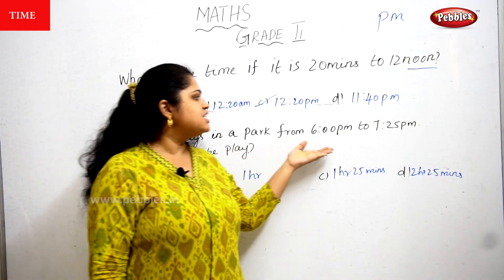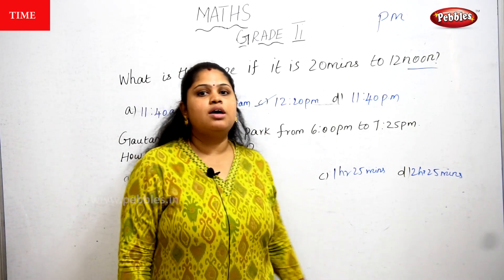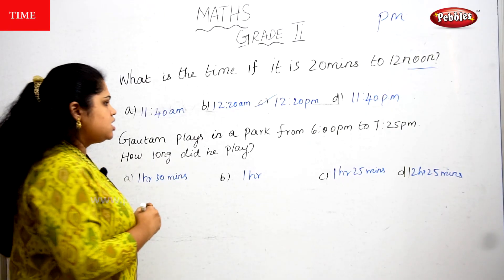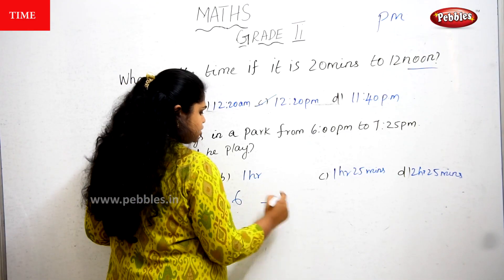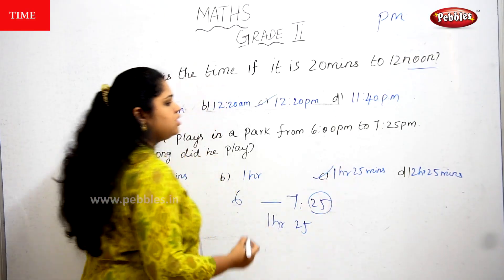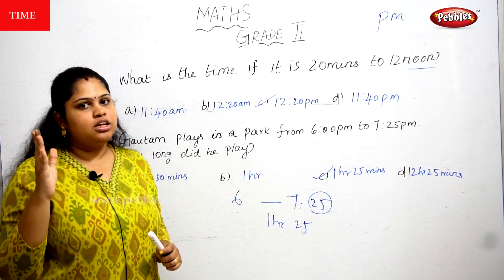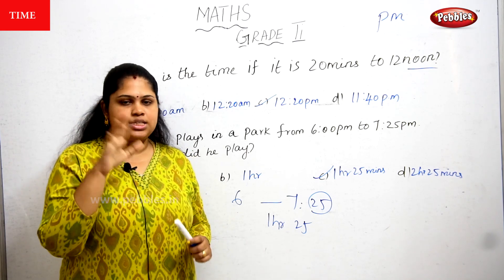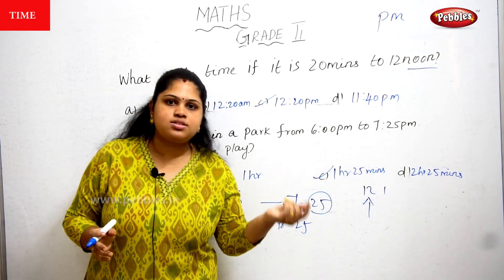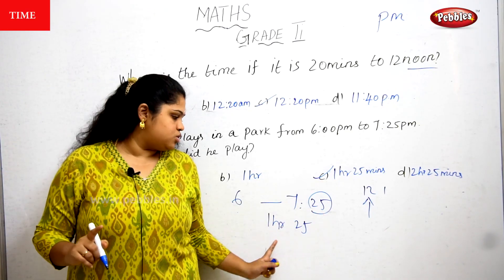Gautam plays in a park from 6 PM to 7:25 PM. Just assume yourself — you went to the park at 6 o'clock and played until 7:25. From 6 to 7 you completed 1 hour. Then 25 more minutes. So 1 hour and 25 minutes is the right answer. When the small needle crosses from one number to another, that is 1 hour completed, and the big needle counts the minutes.